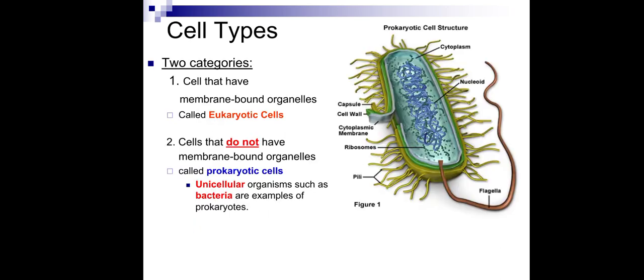All cells come from other cells by cell division. There are two types of cells: cells that have a membrane-bound organelle are eukaryotic cells, and cells that do not have any membrane-bound organelle are prokaryotic cells. Prokaryotic cells are mainly unicellular — uni means one, a single cellular organism. They are mainly bacteria. Here is a diagram of a bacterial cell or prokaryotic cell, with a cell wall, cell membrane, cytoplasm.